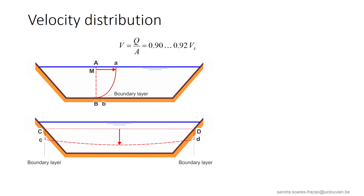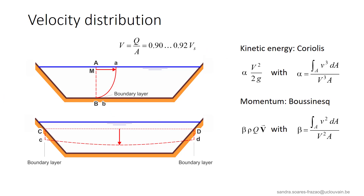In reality, due to friction on the walls — lateral walls or the bed — a boundary layer develops. If we look at the velocity distribution along the water depth, we can observe that the average velocity V is about 90–92% of the surface velocity Vs, and that it is close to zero at the bed. The non-uniformity of the velocity distribution can have an impact on flow calculations. This impact is evaluated using correction coefficients: alpha is the Coriolis coefficient used in the Bernoulli equation for the kinetic energy term, and beta is the Boussinesq coefficient used in momentum equations.